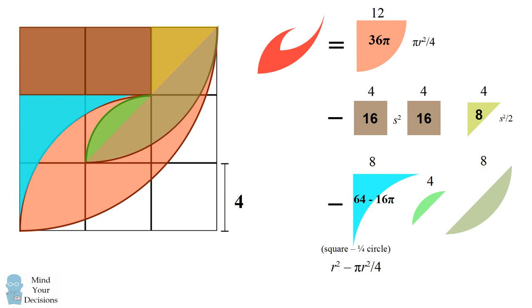The area of a segment of a circle is equal to one-quarter of the circle minus a triangle. Here we have quarter circles. So it's one-quarter of a circle minus the area of an isosceles right triangle. This will be equal to π r² divided by 4 minus r² over 2. We then compute the areas of these segments of circles.